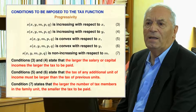To obtain the tax function we impose several conditions. First, we impose progressivity: s must be increasing with respect to x and y, convex with respect to x and y, and non-increasing with respect to m. Conditions 3 and 4 state that the larger the salary or capital income, the larger the tax. Conditions 5 and 6 state that the tax on any additional unit of income must be larger than the tax on previous units. Condition 7 states that the larger the number of tax members in the family unit, the smaller the tax.